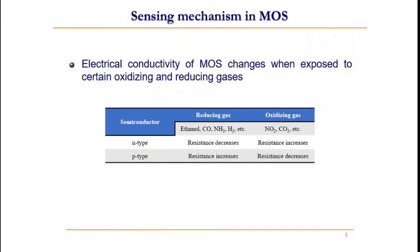When a metal oxide semiconductor is exposed to a gas, its electrical property changes. And this property depends upon the type of semiconductor. If the semiconductor is N-type and if the target gas is a reducing gas, then the resistance decreases. If the target gas is an oxidizing gas, then the resistance increases. In the case of P-type semiconductor, the resistance increases when reducing gases are present and the resistance decreases when oxidizing gases are present.